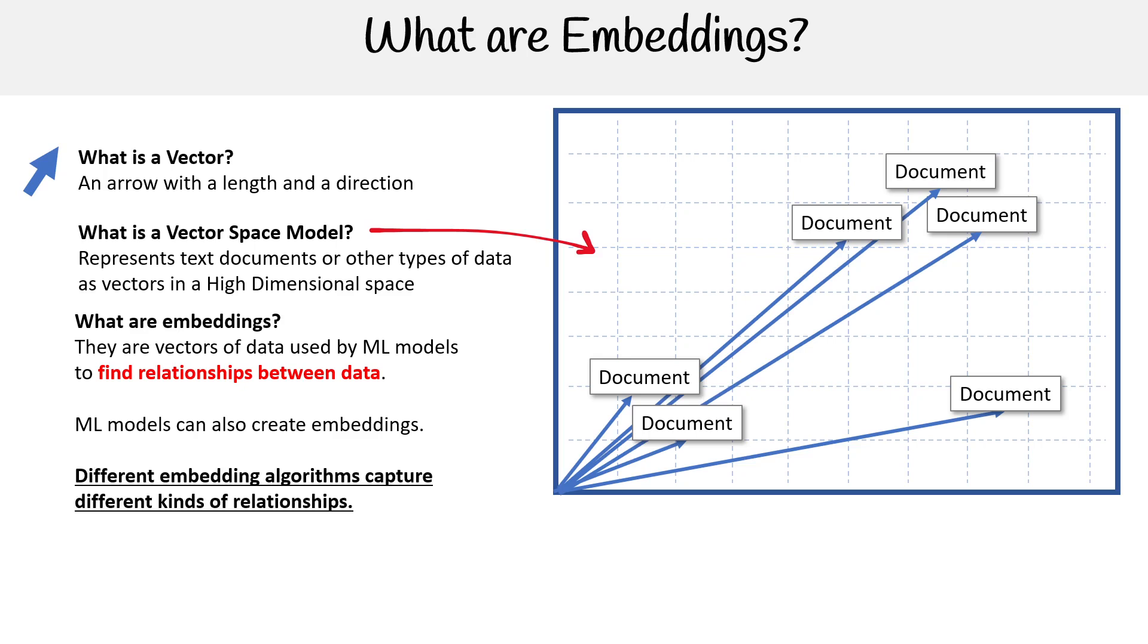So different embedding algorithms capture different kinds of relationships. It could be similarity in words in terms of the way they are spelled, or it could be the length of a word, or the relationship could be contextual, which is like the context related to a specific industry or vertical. So the embedding is going to change the relationship that is projected into that vector space.